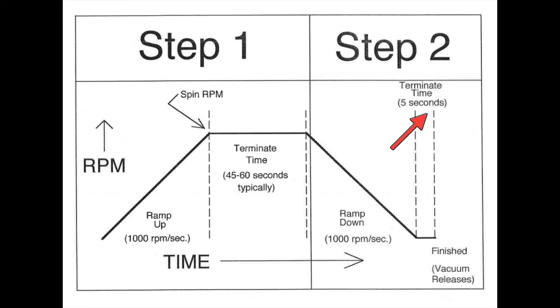So since someone may have entered three or four steps on recipe eight or nine, the one that you're changing, and you might only be entering a two step process, you would need to check steps three and four to make sure zero is entered for the RPMs and terminate times for any steps that follow your recipe.